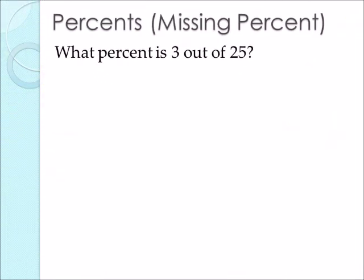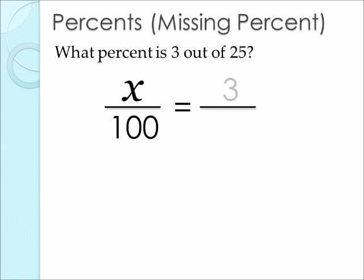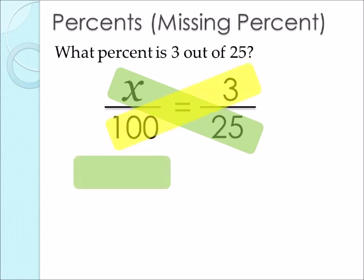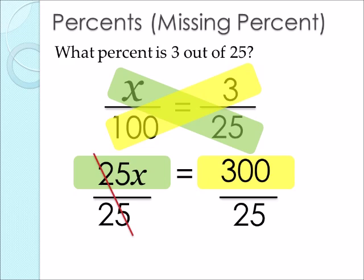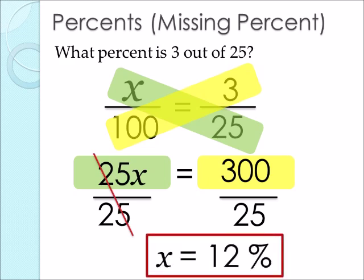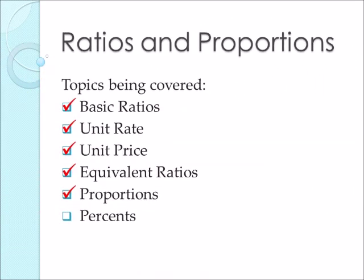Here is another one: what percent is 3 out of 25? We set this up as a proportion, but now we are looking for our percent. So x goes over 100, set equal to 3 over 25. Using cross multiplication: x times 25 gives us 25x, equal to 100 times 3, which is 300. To solve for x, we divide both sides by 25. 25 divided by 25 cancels out, leaving x. 300 divided by 25 gives us 12. So x equals 12%. This covers percents.